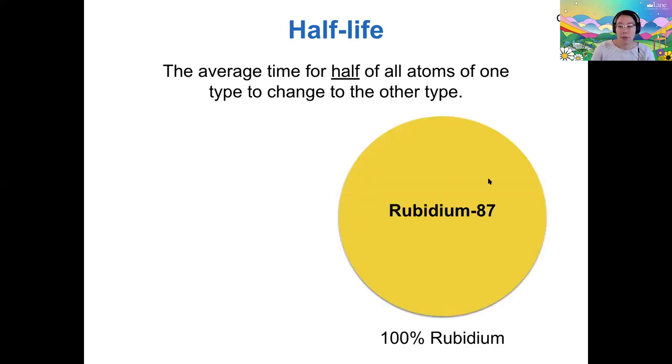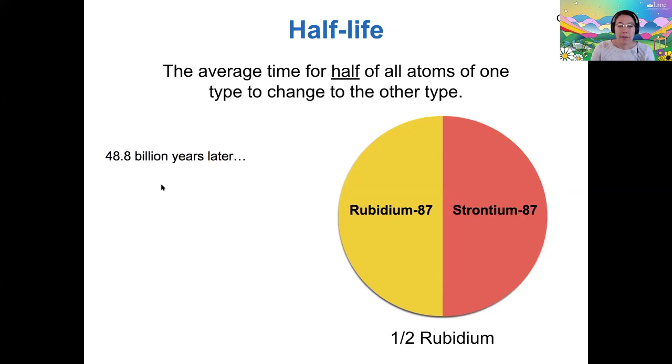So for example, if I start with rubidium, a radioactive isotope of rubidium, and I start with 100% rubidium, its half-life is 48.8 billion years. So 48.8 billion years after I started with my sample, I would have a sample of half rubidium and half strontium-87.